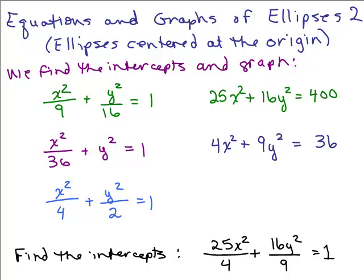This is part two of equations and graphs of ellipses and we're working only with ellipses centered at the origin. We find the intercepts and graph these five ellipses here and we find the intercepts for this last equation here that's also an ellipse.